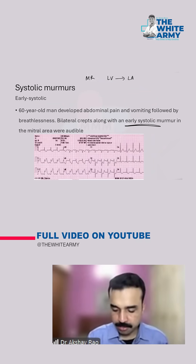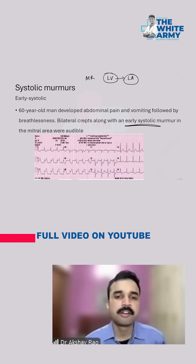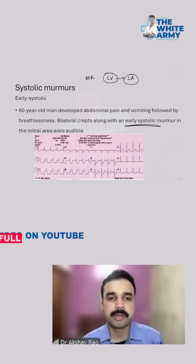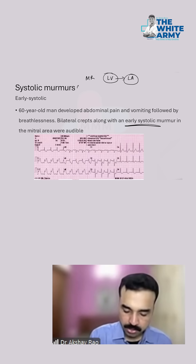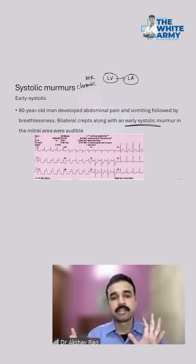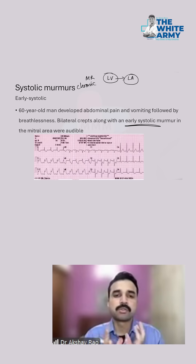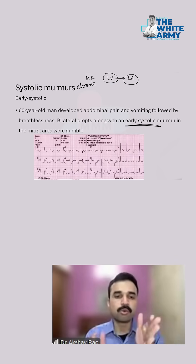In chronic MR, the left ventricle will dilate — it has time. So the left ventricle slowly dilates to try and maintain the forward flow.